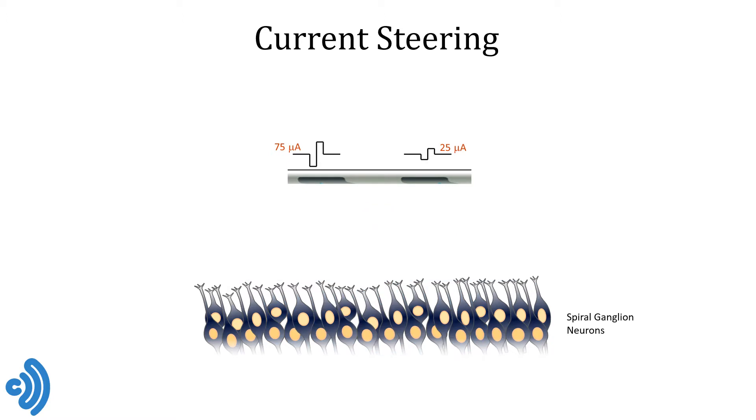And of course we can change the amplitude ratio between the two electrodes, like in this example, where the left electrode stimulates with 75 microamps and the right one with only 25 microamps. The combined field of the two electrodes now peaks in between the electrodes but closer to the left high amplitude electrode than to the right one. And the pattern of neural excitation will mirror this with its centroid closer to the left electrode than to the right.